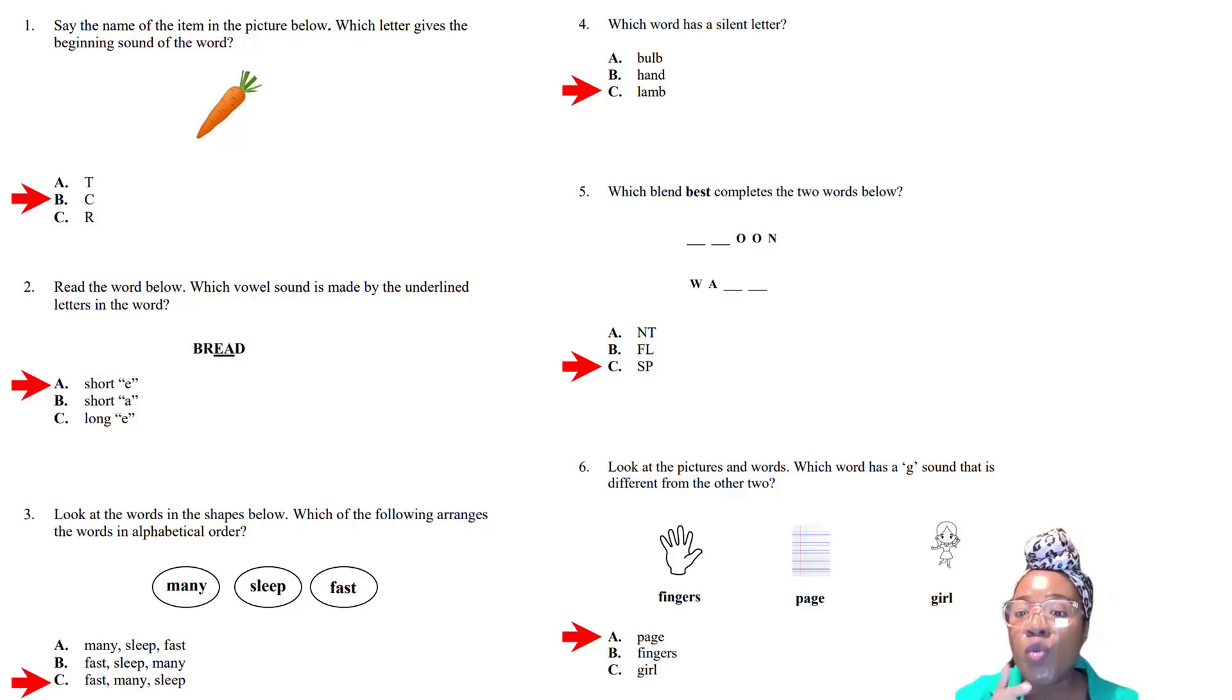Question five: Which blend best completes the two words below? We have N-T, F-L, and S-P. The question wants it to fit both words. S-P gives you S-P-O-O-N, spoon, and W-A-S-P, wasp. It fits both words, so that's the answer.